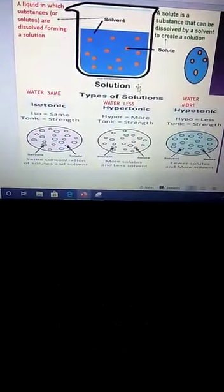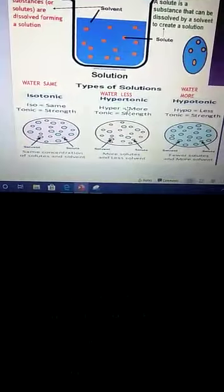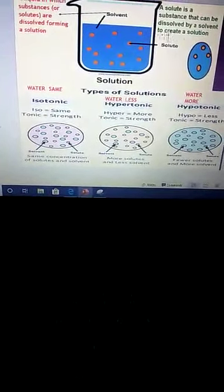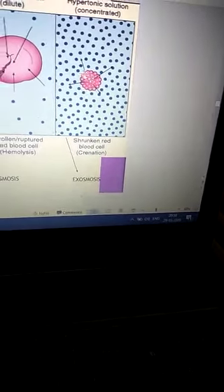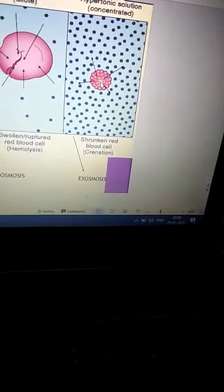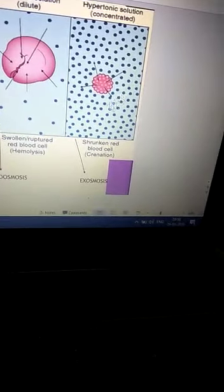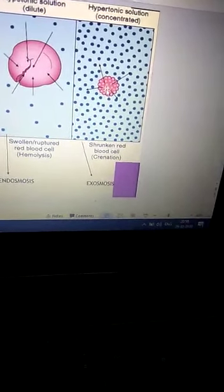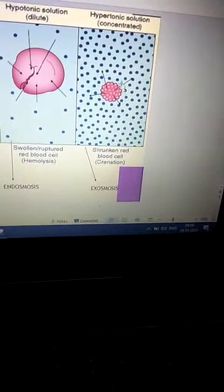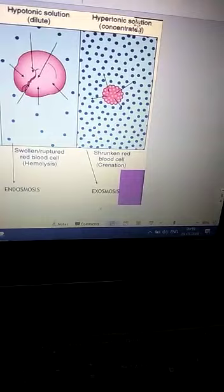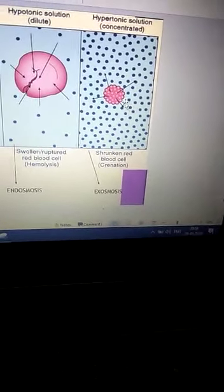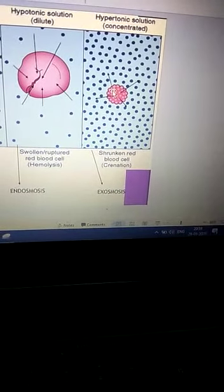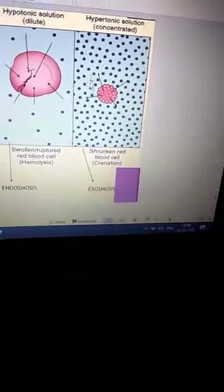This hypertonic solution mein jaysse hi aap cell ko rakhengue, hypertonic solution hai. That means, yeh solute comparatively kam hai. Lekin kya zada ho ga obviously? Water zada ho ga. That means, agar solute kam hai cell ke anndar, toh water toh zada ho ga. Aur water comparatively is beaker, is surrounding mein, sim volume mein kam hai. Toh kya ho ga by diffusion? The water from the cell will start moving out into its surrounding. That means, when a cell is kept in hypertonic solution, toh cell will start losing water. The water will cross the cell membrane and come outside in the surrounding medium.